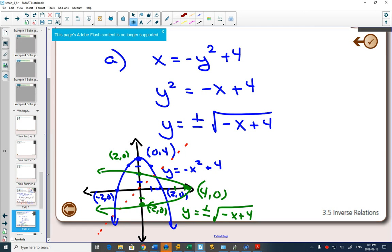In fact, the plus or minus, can you see that if you only looked at half of the green graph, can you see a square root graph? The top part is the positive square root of negative x plus 4. The bottom part is the negative part.